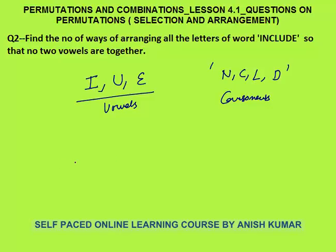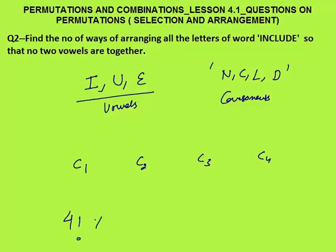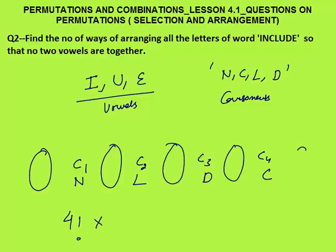We have 4 consonants. Consonants 1, 2, 3, and 4 — that is N, C, L, and D. These 4 consonants can be arranged in 4 places in 4 factorial ways. Let's say N came here, L came here, D came here, C came here — this is one situation. Now we want that vowels should not be together, so vowels will come in the spaces between the consonants.